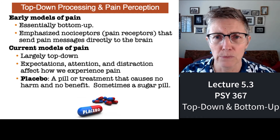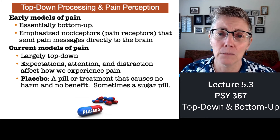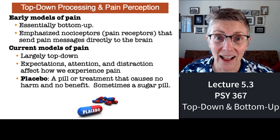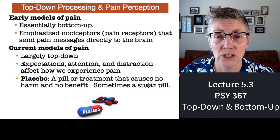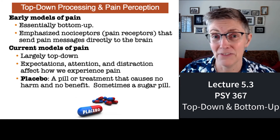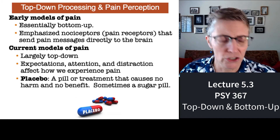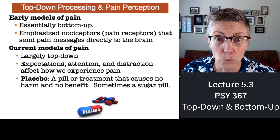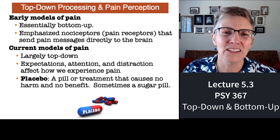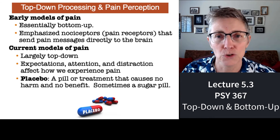But we now know that's not accurate. Modern theories of pain perception are highly top-down — they emphasize the role of expectations, attention, and distraction. If you're taking a child to get a vaccination and you tell them 'it's really going to hurt, look right there, pay attention,' it will hurt more. But if you talk to them, distract them, and don't have them focus on it, it will hurt less. Those are top-down processes.